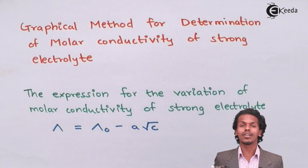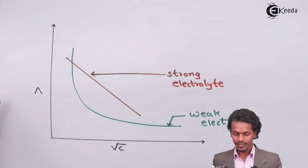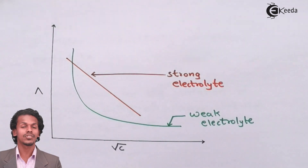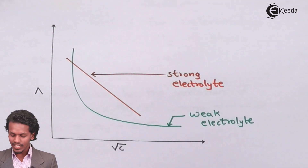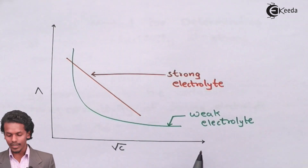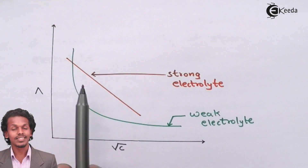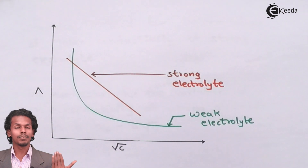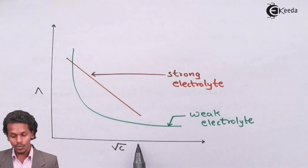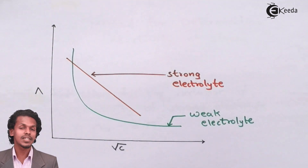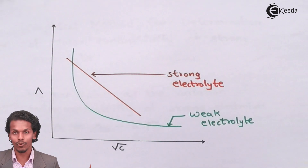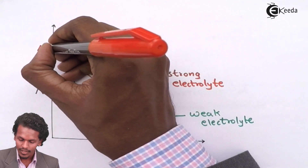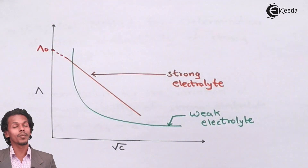By applying this formula, we derive a graph showing the variation between molar conductivity and concentration for both strong and weak electrolytes. For a strong electrolyte, as concentration decreases, molar conductivity increases. To estimate the maximum molar conductivity, the concentration must approach zero — that is, infinite dilution. By extrapolating the plot, we can obtain the value of lambda naught, and this is only observable for a strong electrolyte.